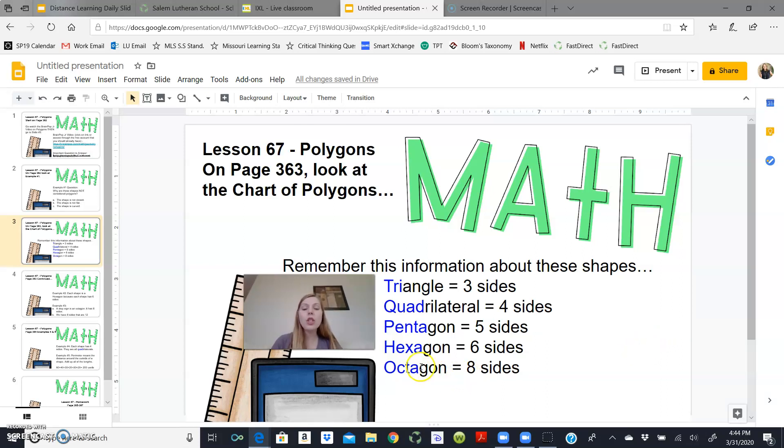Now the last one, you can think about an octopus. An octagon has eight sides just like an octopus has eight tentacles. All right, so triangle, quadrilateral, pentagon, hexagon, and octagon. Be thinking about those as we continue in this lesson.